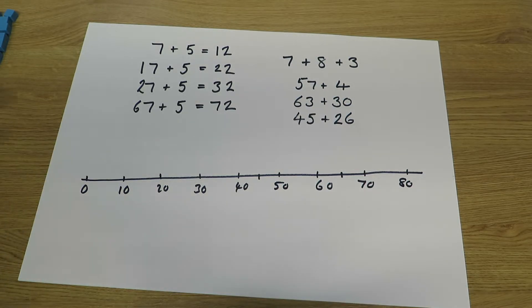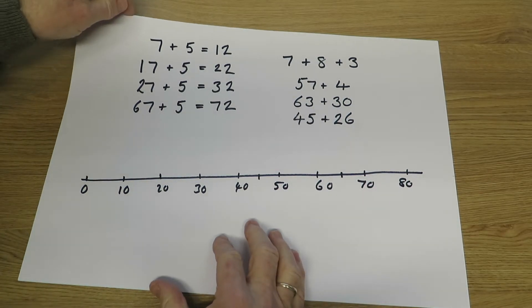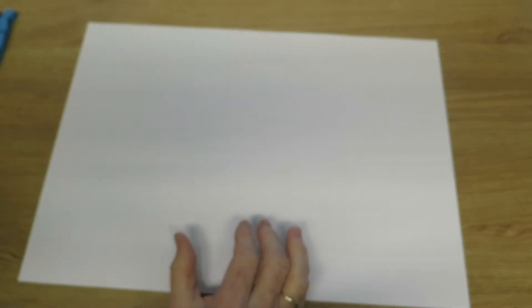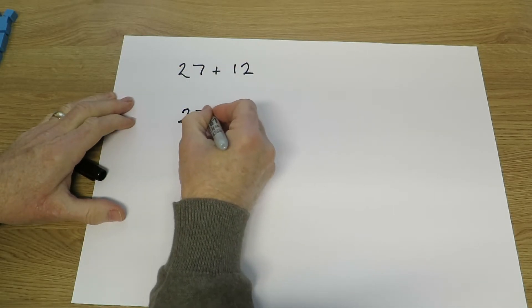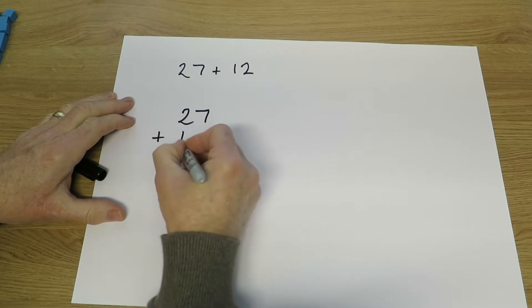They will begin to set numbers out in columns, learning about the units or ones column and the tens column. So let's look at the question 27 add 12. In columns we'd write that as 27 plus 12.